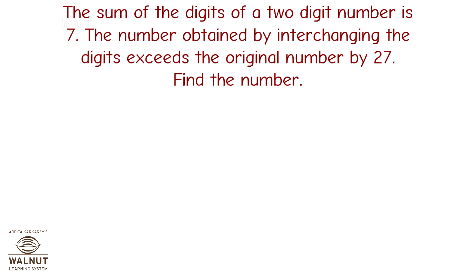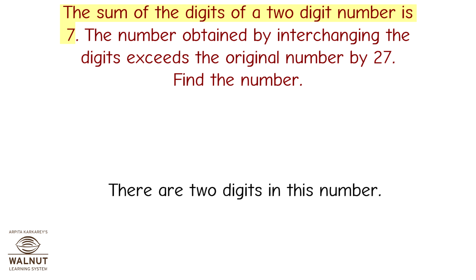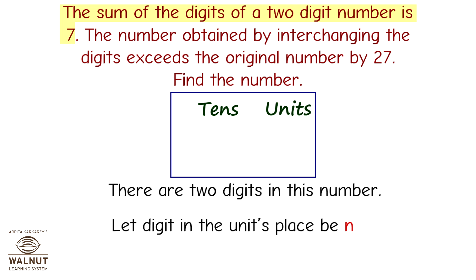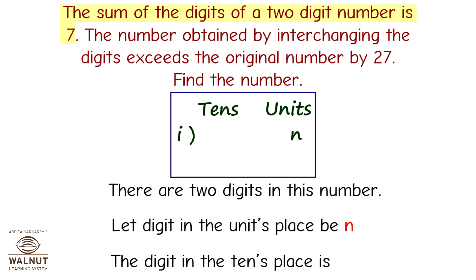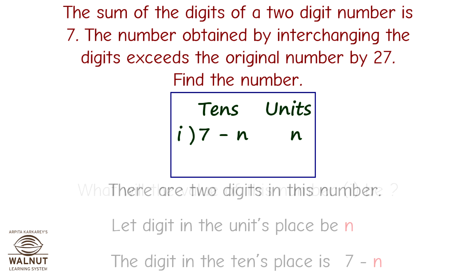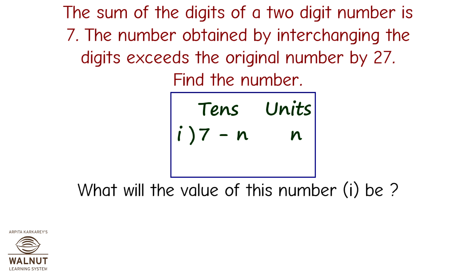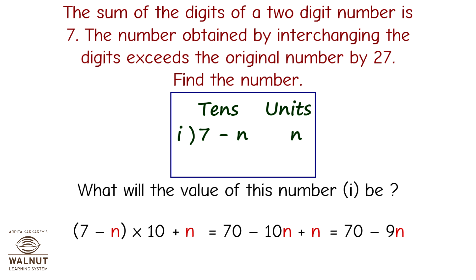Let's take a look at another word problem. The sum of the digits of a two-digit number is 7. The number obtained by interchanging the digits exceeds the original number by 27. Find the number. There are two digits in this number. Let the digit in the units place be n. The digit in the tens place is 7 minus n. The value of this number is 7 minus n into 10 plus n, which equals 70 minus 9n.